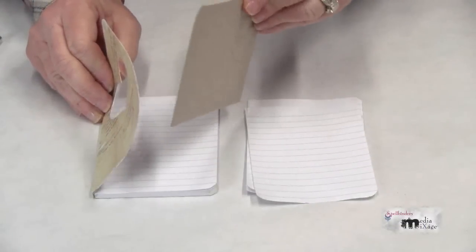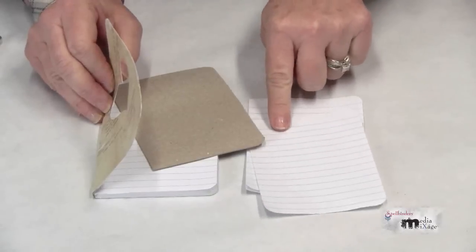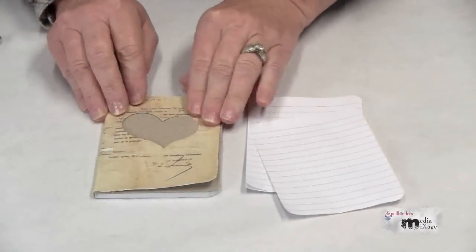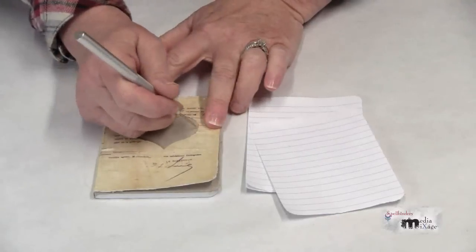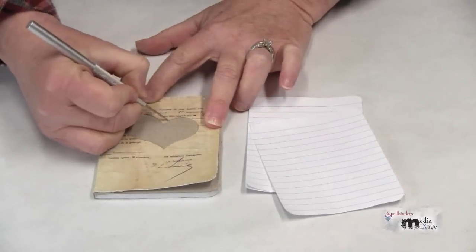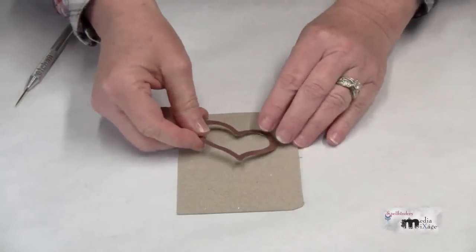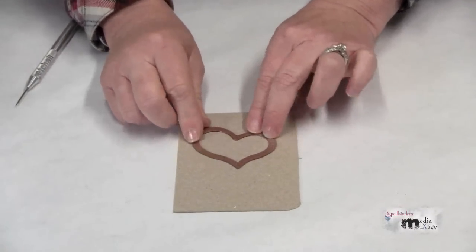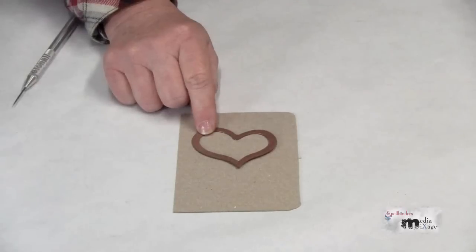I've cut a piece of chipboard to size and I've also removed the same thickness of papers from my notebook. To create the shadow box effect, I'm going to draw around my opening with a stylus. Align the die using the markings from the stylus and pass this back through the grand caliber machine to cut it out.